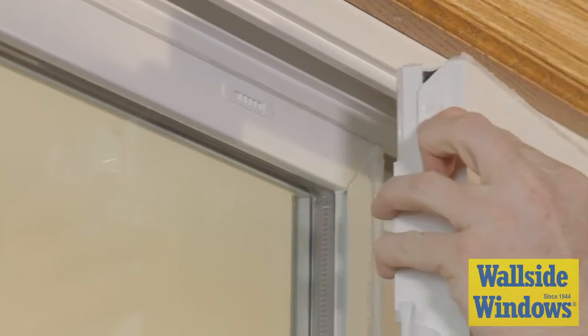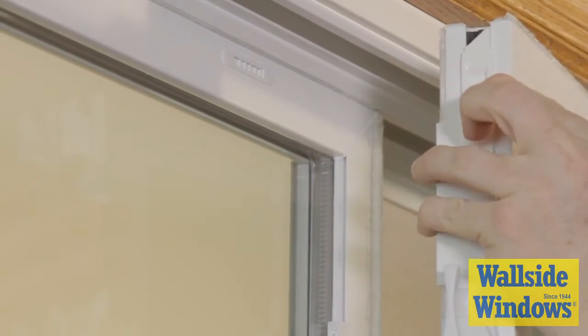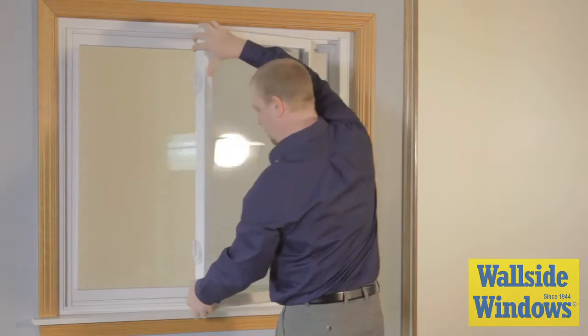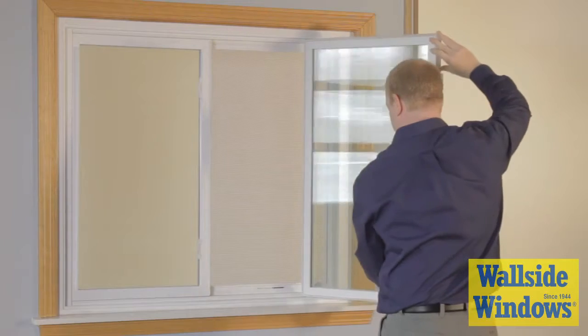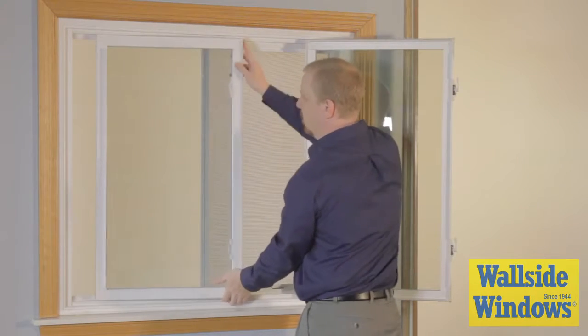Using both hands, disengage the tilt latches while keeping a hold of the sash. Now swing the sash open until it is fully extended. The other sash can be opened in the same way.